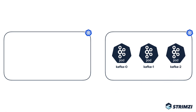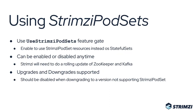Hopefully, this got you interested in Strimzi PodSets and you are eager to try them out. To do that, you just need to make sure that the use Strimzi PodSets feature gate is enabled, and you can use them. It can be enabled or disabled anytime — Strimzi just needs a rolling update of the Zookeeper and Kafka cluster to move either to Strimzi PodSets when enabling it, or back to StatefulSets when disabling it.